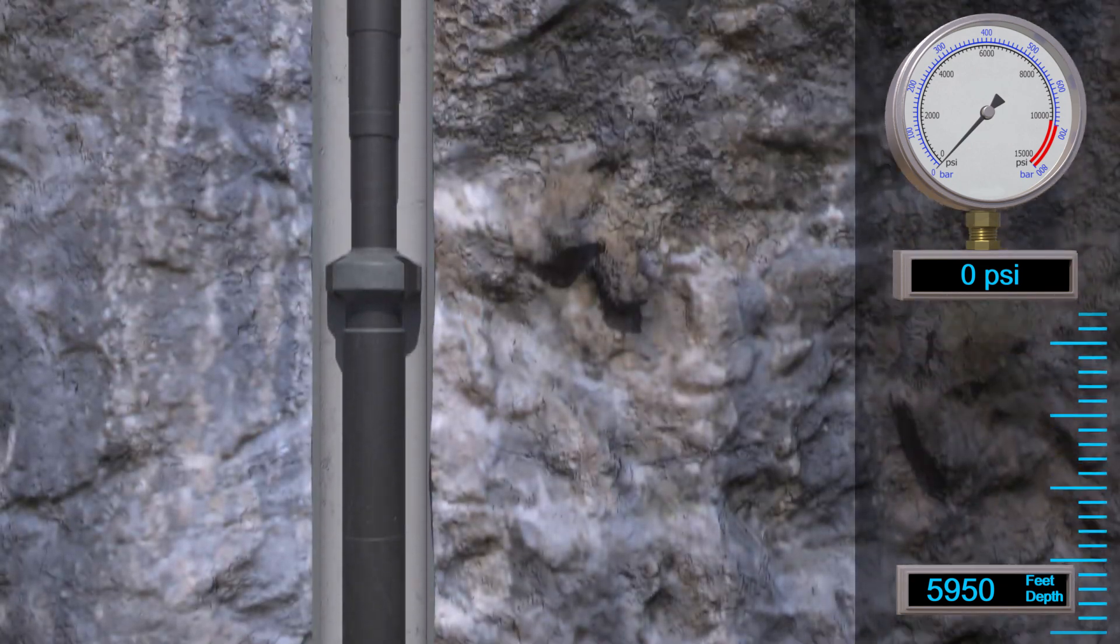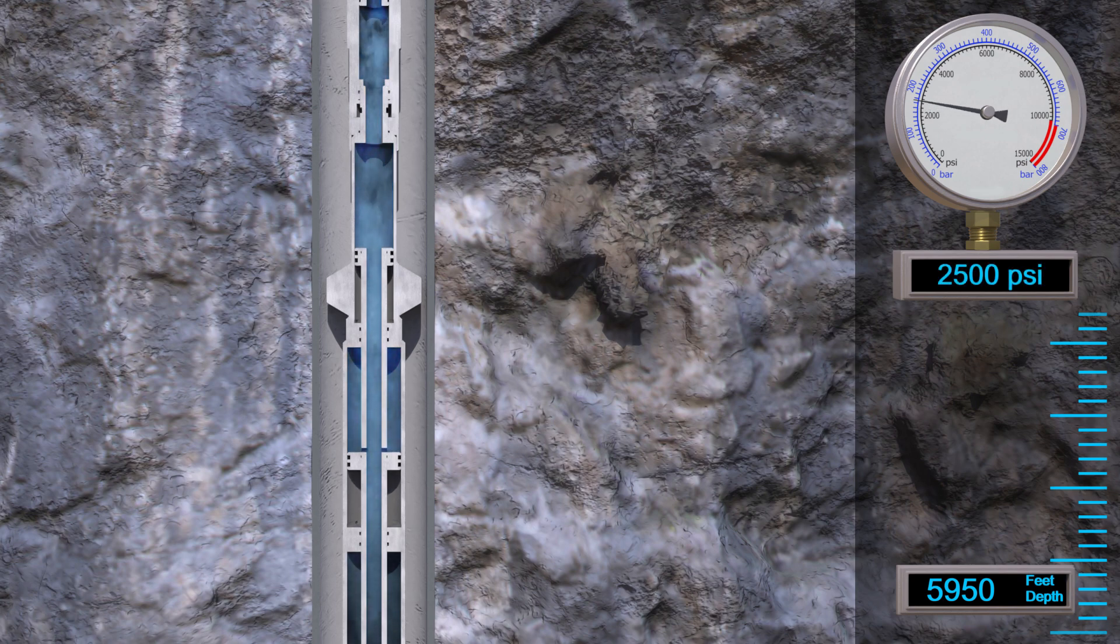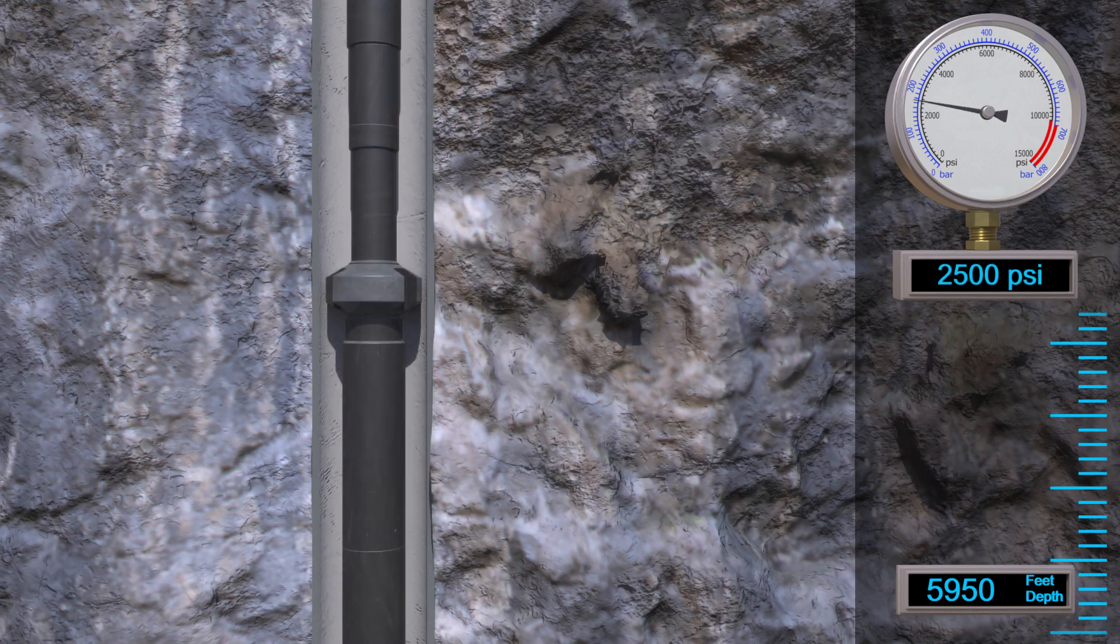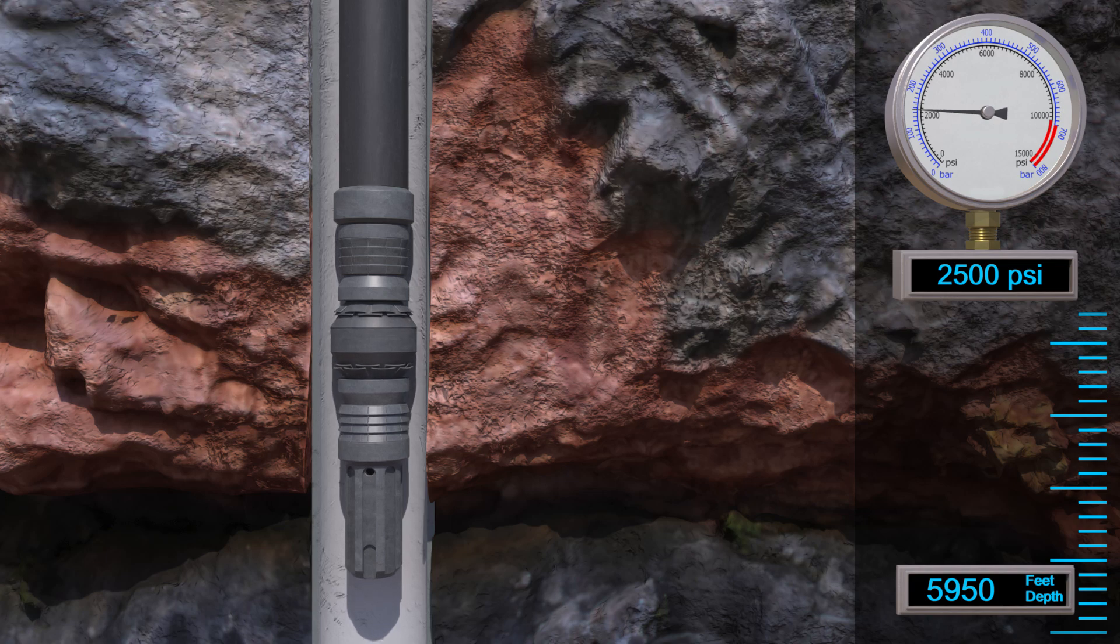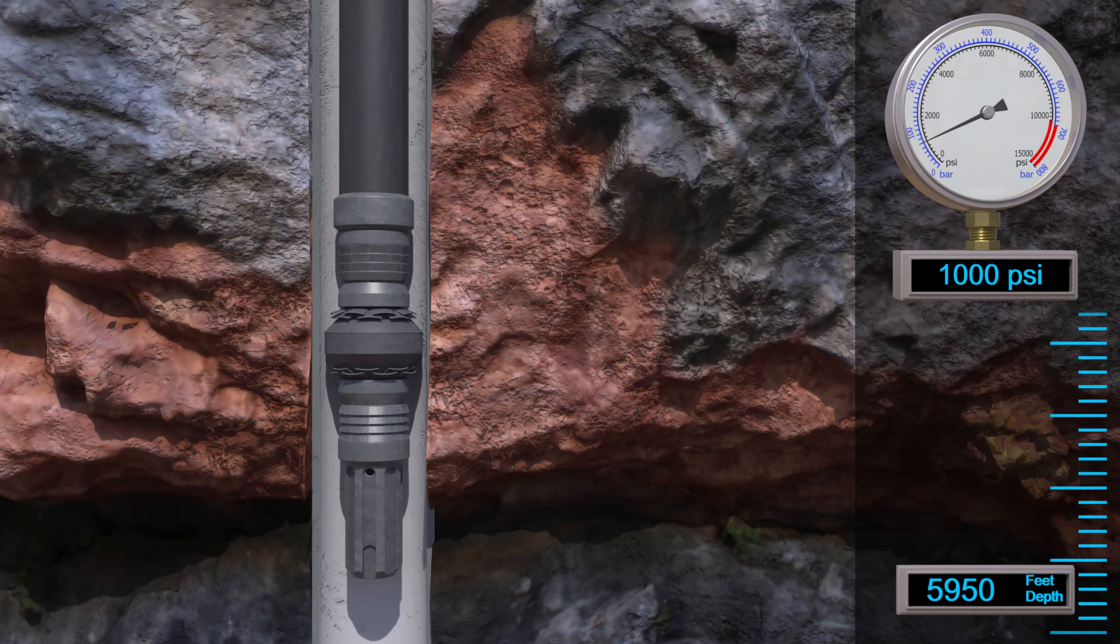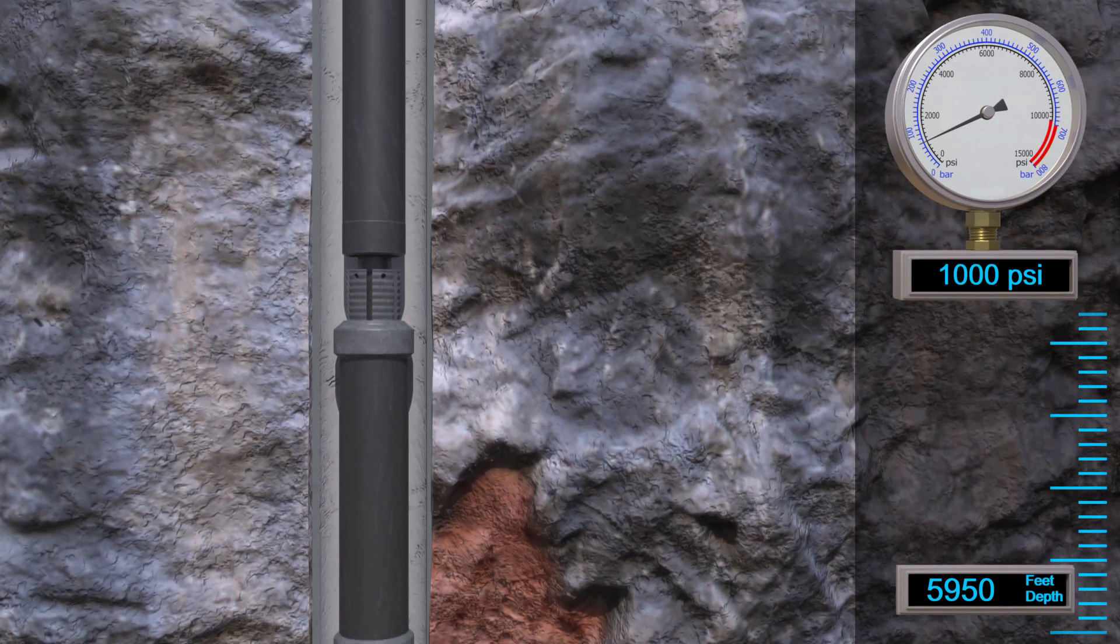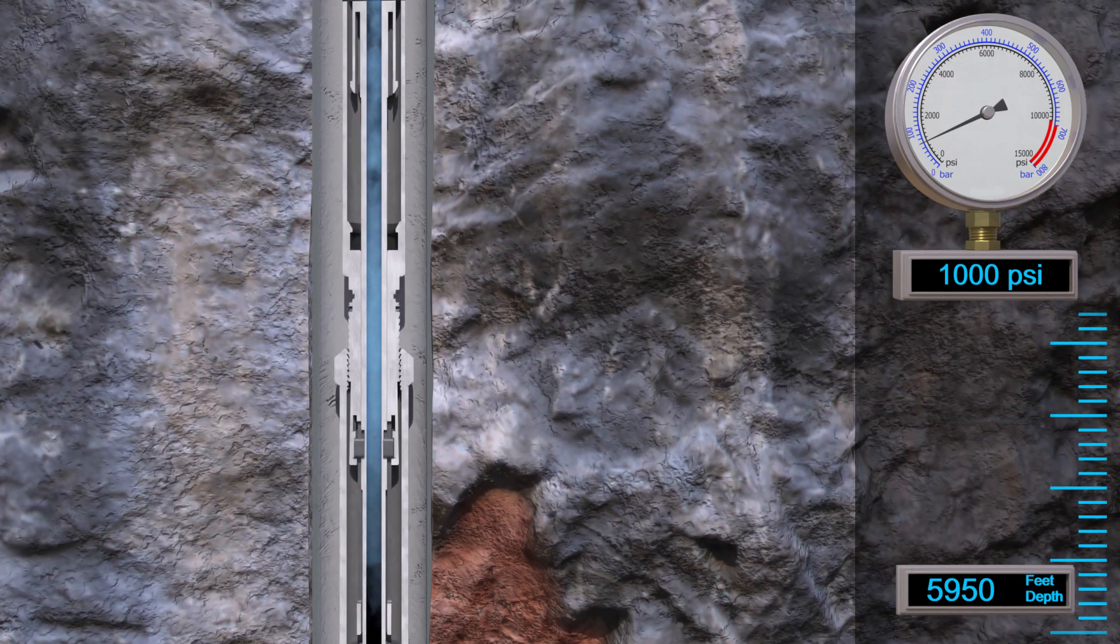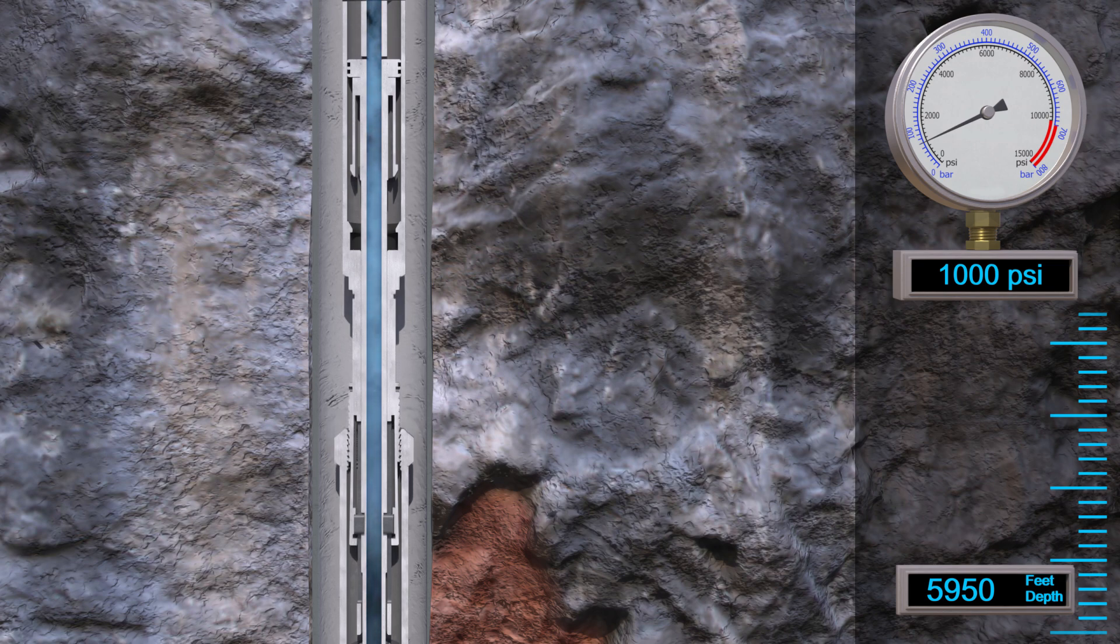We'll start pumping fluid down the coil. The fluid enters each piston chamber. Since the surface area on top of the piston is larger than the bottom, it creates force to start stroking the setting sleeve which squeezes the retainer to seal the casing. Once the retainer is set in place, the pistons continue in a downward motion, and the locked collet latches inside a profile to prevent the pistons from sliding back up.